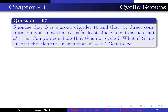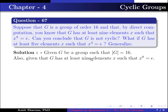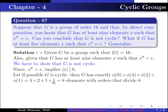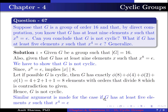Question number 67: Suppose G is a group of order 16 and by direct computation you know G has at least 9 elements x such that x⁸ = e. Can you conclude G is not cyclic? What if G has at least 5 elements x such that x⁴ = e? Since x⁸ = e implies the order of x divides 8, if G were cyclic it would have exactly φ(8) + φ(4) + φ(2) + φ(1) = 4 + 2 + 1 + 1 = 8 elements whose order divides 8, contradicting the given 9 elements. Hence G is not cyclic. A similar argument applies for the case with at least 5 elements satisfying x⁴ = e.